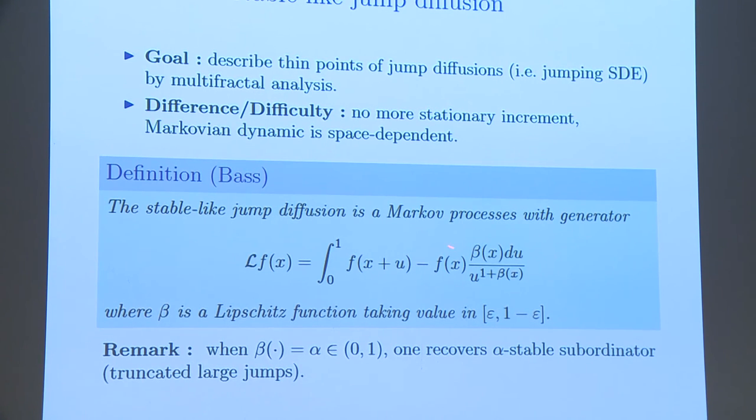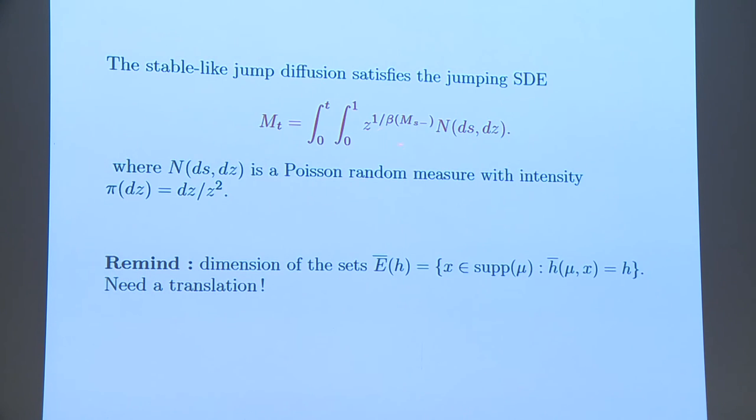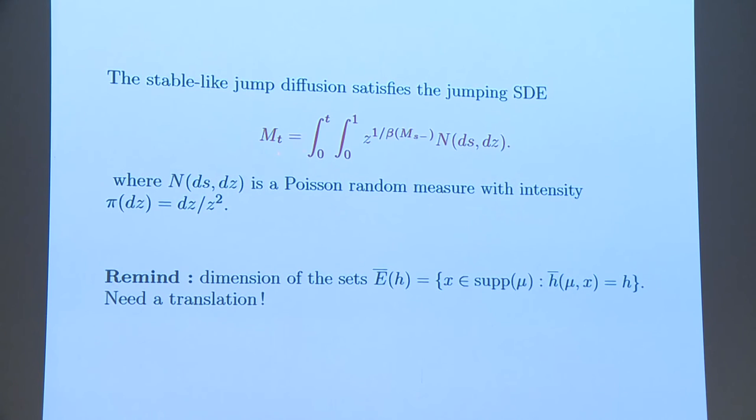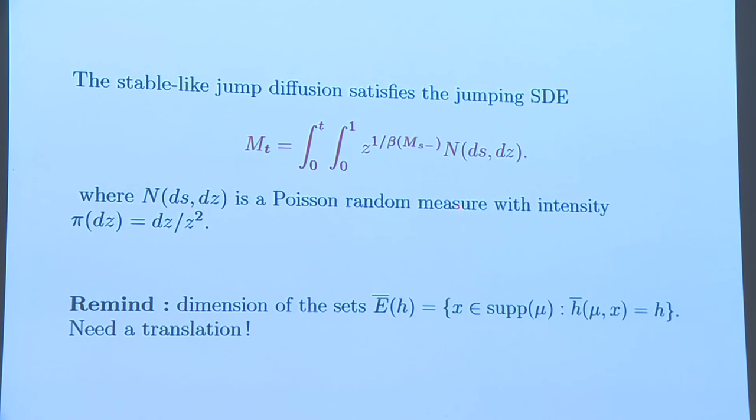This is a Markov process with generator of this kind. We remarked that if beta is a constant function, we recovered what we call alpha-stable subordinator. Of course, here, we only keep the large jumps. The large jumps do not influence the sample path properties of a process. We remove it. The SDE satisfied by this process is this kind. It is written as a stochastic integral with respect to some Poisson point process, some Poisson measure generated by a Poisson point process with this intensity.